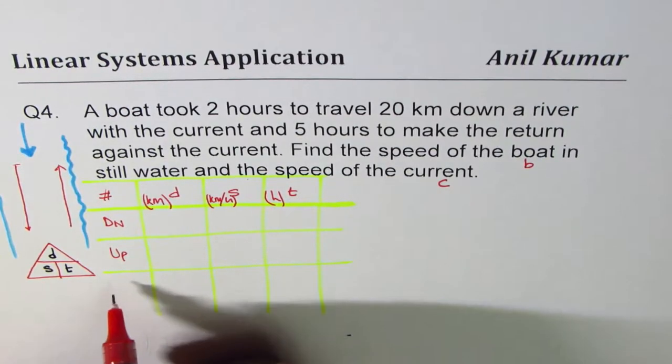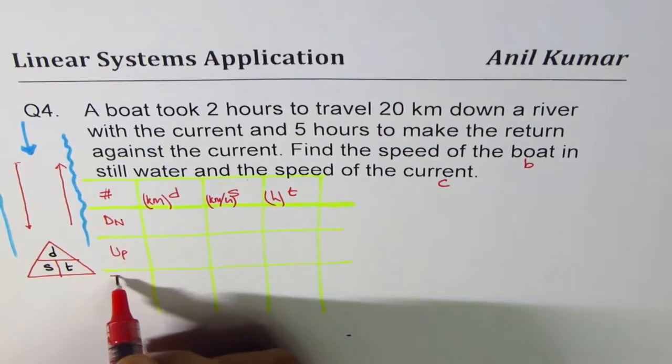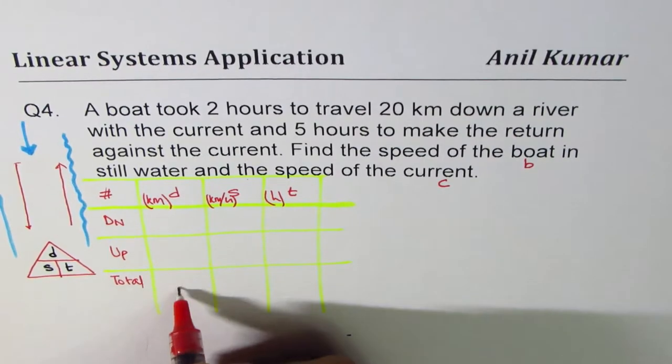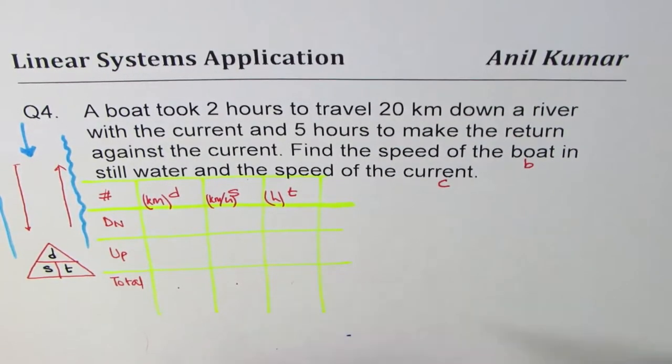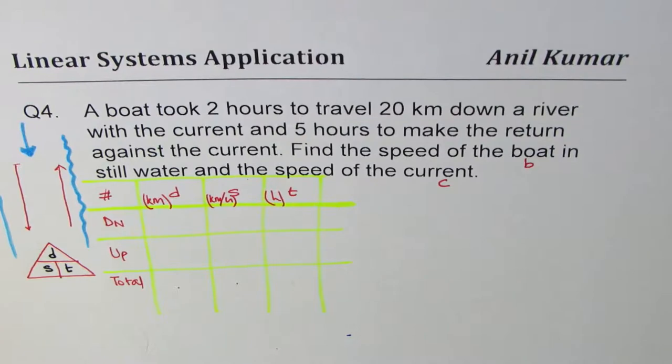Now from the given description, just fill in whatever is given to you. And the last row is for total. Total distance, total whatever and the speed. That is how this matrix can be designed. Now this matrix helps to solve each and every question where distance, speed and time are concerned.